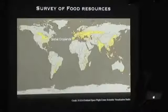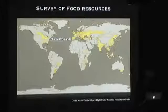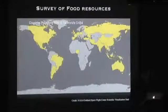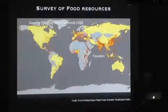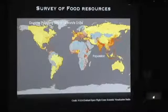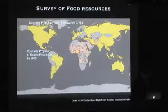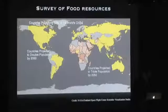The Terra and Aqua satellites gather data of the Earth's surface every two days. This animation shows where the world's food is grown versus where the world's food is consumed. The movie starts with global croplands, then fades to the countries that produce over 80% of the world's wheat, grain, and cereal. It then overlays the world's population density, and fades to show the countries projected to double and triple their populations by the year 2050.